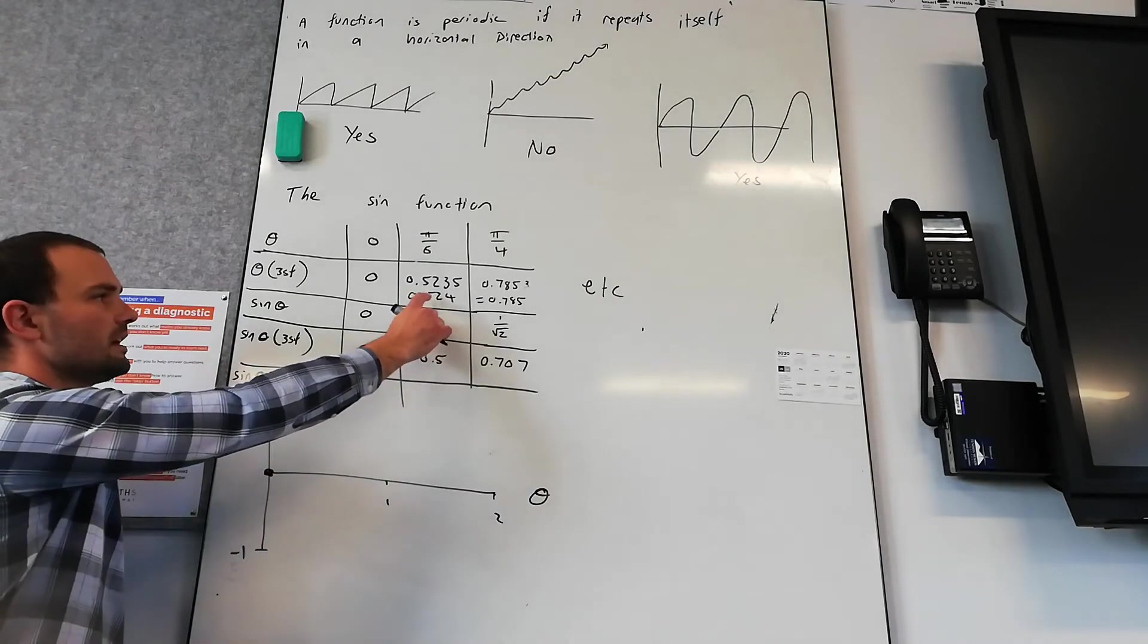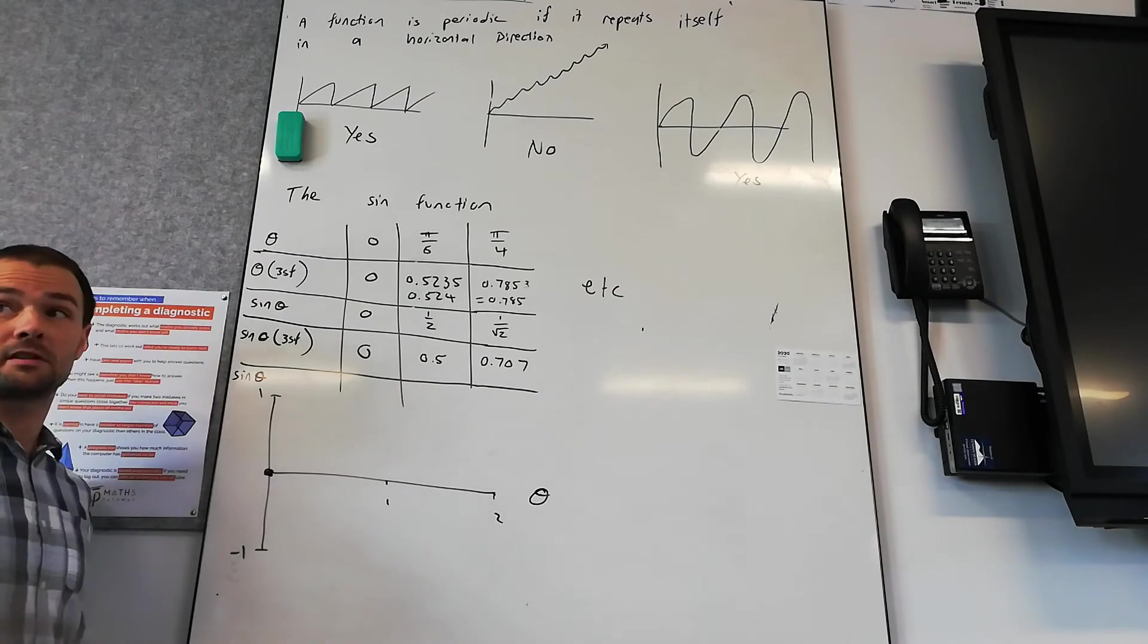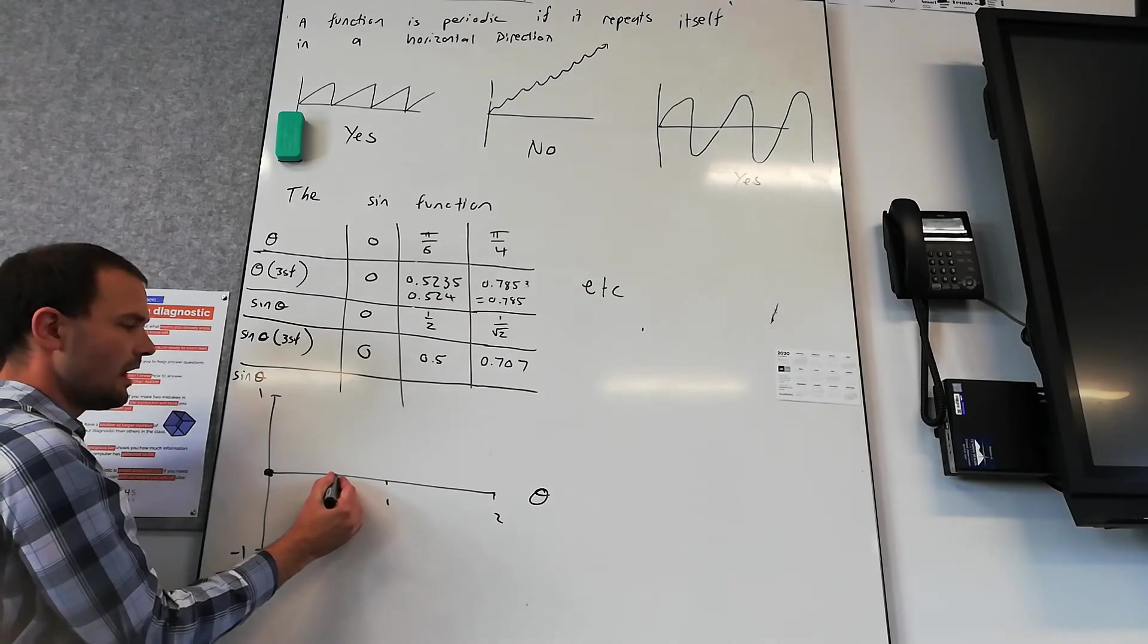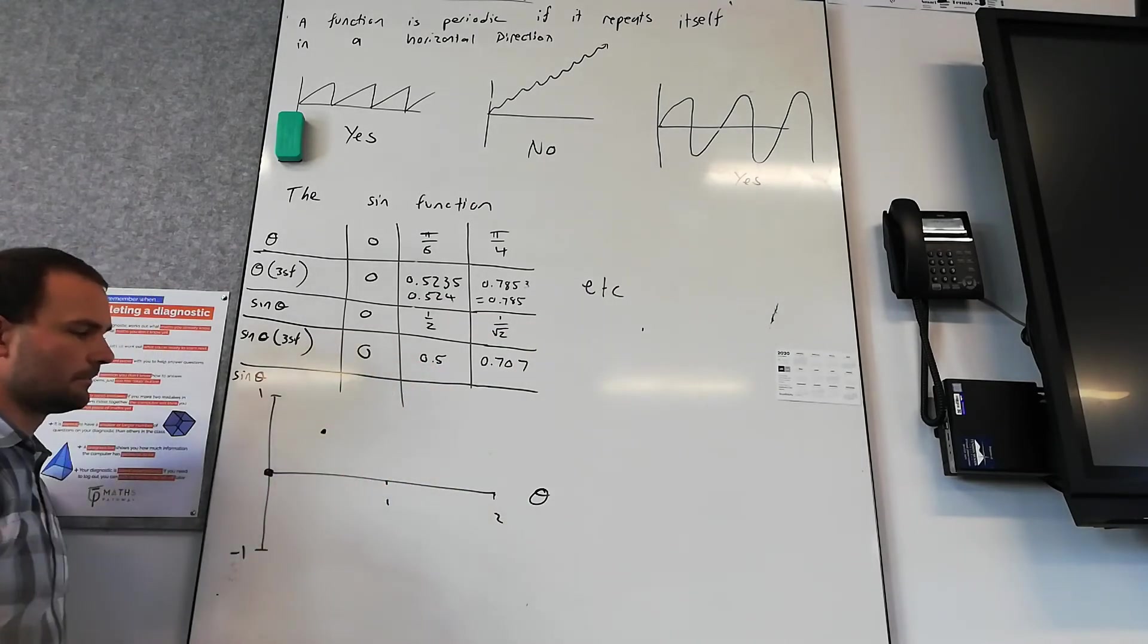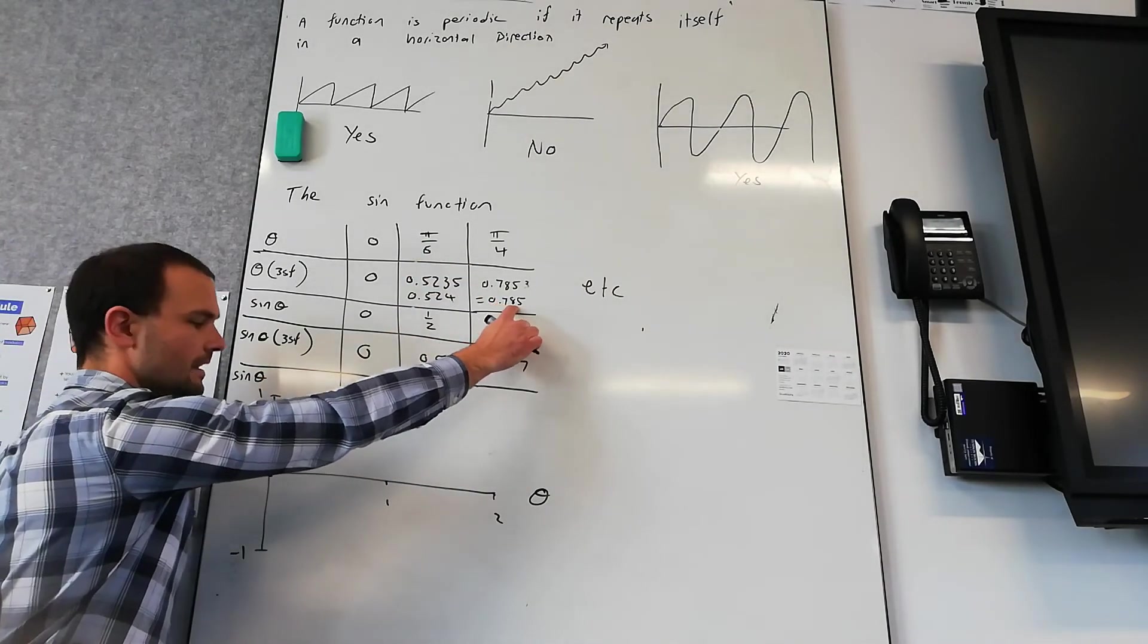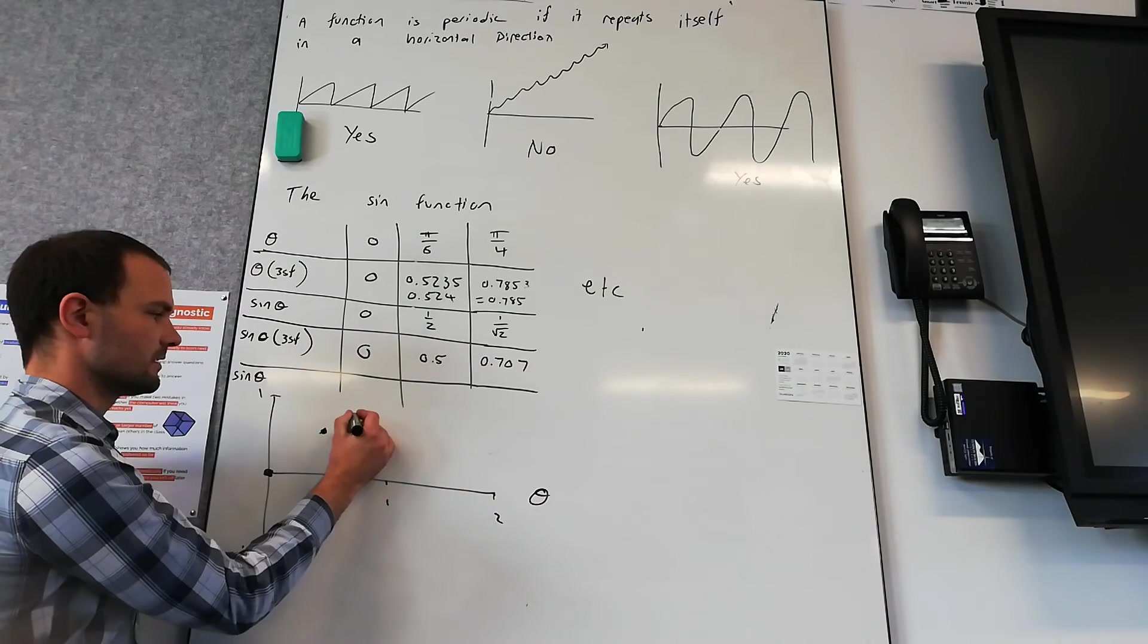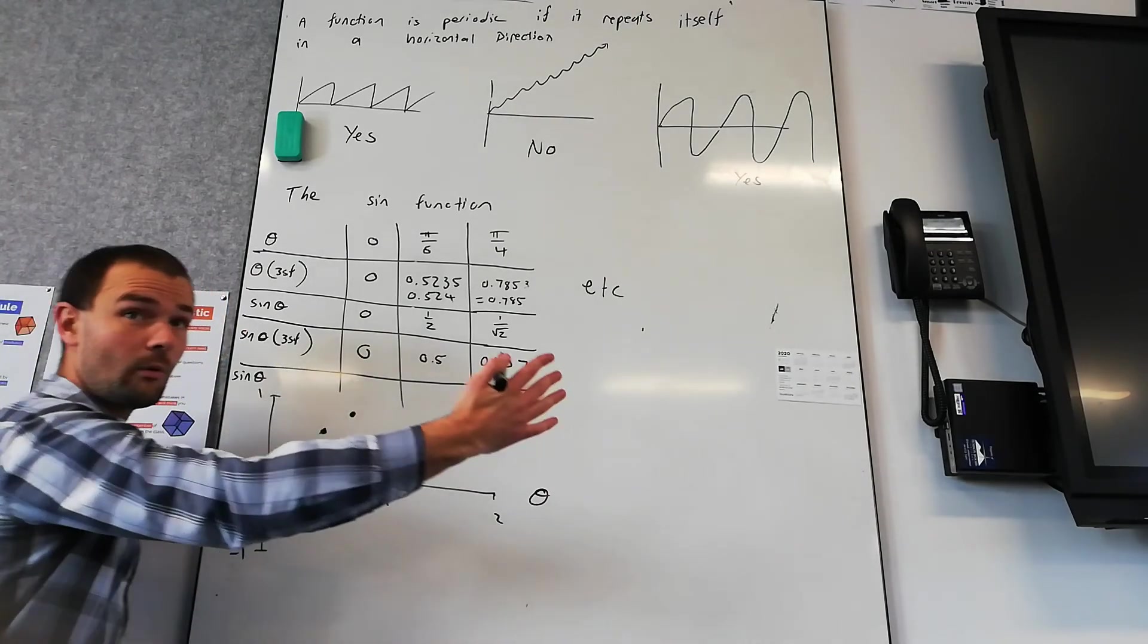Our first point is the angle is 0 and our y-value is 0, so we're going 0, 0. Our next coordinate is theta is 0.524. We're going to have to approximate—that's why I've drawn that grid line. Do it as best as you can. Theta is 0.524, so about here, and the y-coordinate is 0.5, so that's going to be halfway there. Then our next point, 0.785, is about halfway between 0.5 and 1, and it corresponds with 0.7.